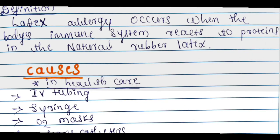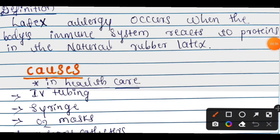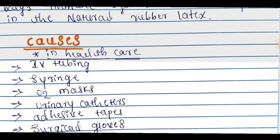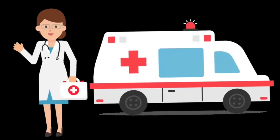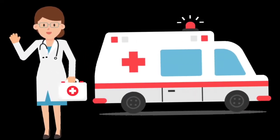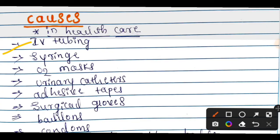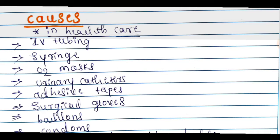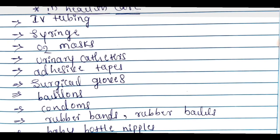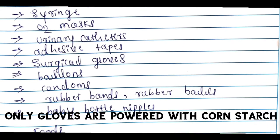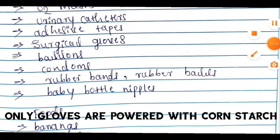Now what causes latex allergy? The first cause is in healthcare settings — that is, in the hospital. Causes include IV tubing, syringes, oxygen masks, urinary catheters, adhesive tape, surgical gloves, balloons, and condoms. All of these can lead to the development of a latex allergy.